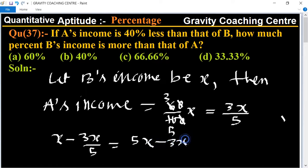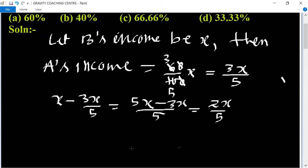So therefore, B's income is 2X/5 more than A's income.